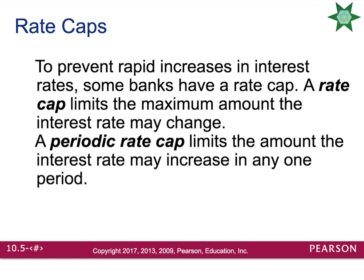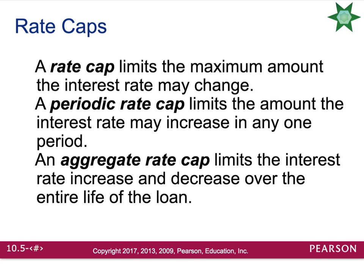Rate caps: to prevent a rapid increase in the interest rate, some banks have what's called a rate cap. A rate cap limits the maximum amount the interest rate can change. A periodic rate cap limits the amount the interest rate may increase in any one period — for example, annually, it tells you how much they can raise the interest rate for that year. An aggregate rate cap limits the interest rate increase over the entire life of the loan. For example, if the aggregate rate cap was 3% on a 30-year loan, they would only be able to raise your interest rate 3% over the entire 30 years.